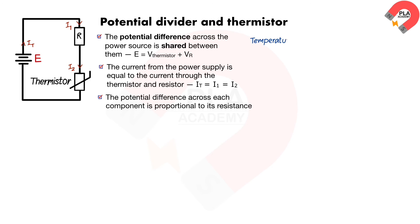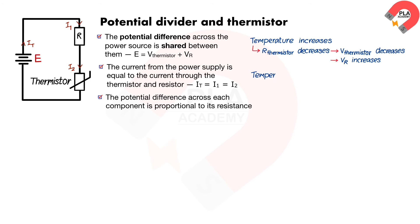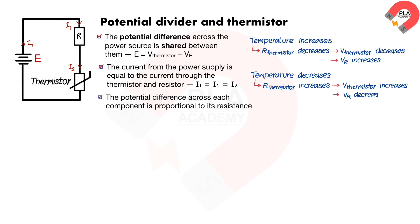When the temperature increases, the resistance of the thermistor decreases. The thermistor will get a smaller share of the potential difference, while the resistor will get a greater share. When the temperature decreases, the resistance of the thermistor increases. The thermistor will get a greater share of the potential difference, while the resistor will get a smaller share.